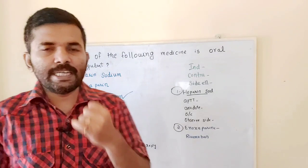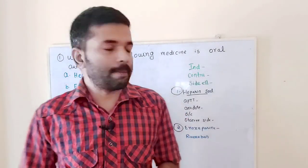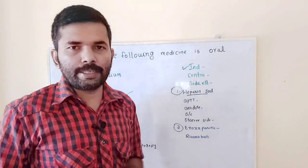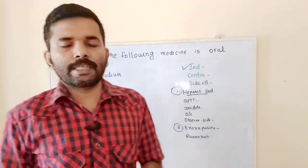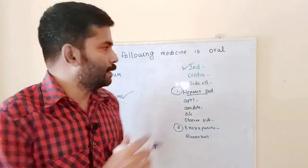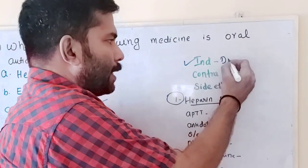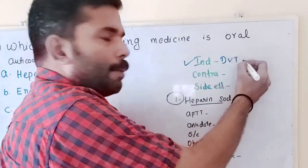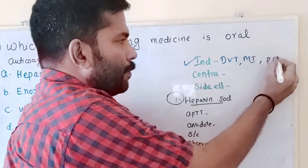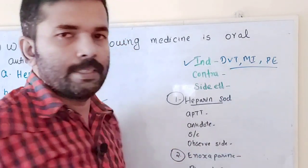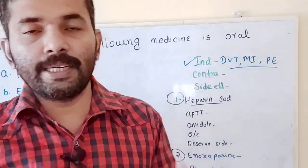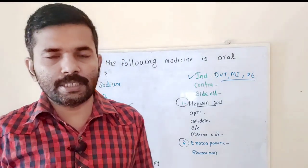What are the indications of anticoagulant therapy? The indications include conditions where blood clot formation occurs, like DVT (deep vein thrombosis), myocardial infarction, and pulmonary embolism.